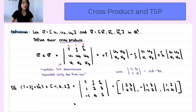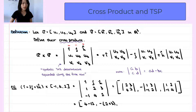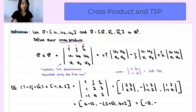Then we compute the 2 by 2 determinants. The first one, we have 4 minus 12. The second one, we have negative 2 plus 3. The third one is 4 plus 2. So the result of this cross product is a vector in R3 with components negative 8, negative 5, and 6.